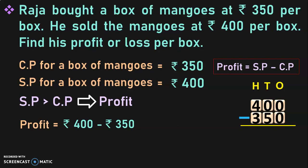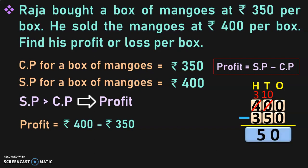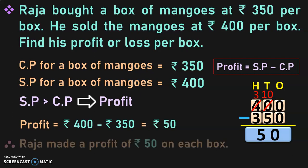Write down the place values and subtract 400 minus 350. In the 1's place: 0. In the 10's place: 0 minus 5 — you cannot do that, so borrow from the 100's place. You will get 10 tens; 10 minus 5 is 5. In the 100's place: 3 minus 3 is 0. So the difference is rupees 50. Raja made a profit of rupees 50 on each box.